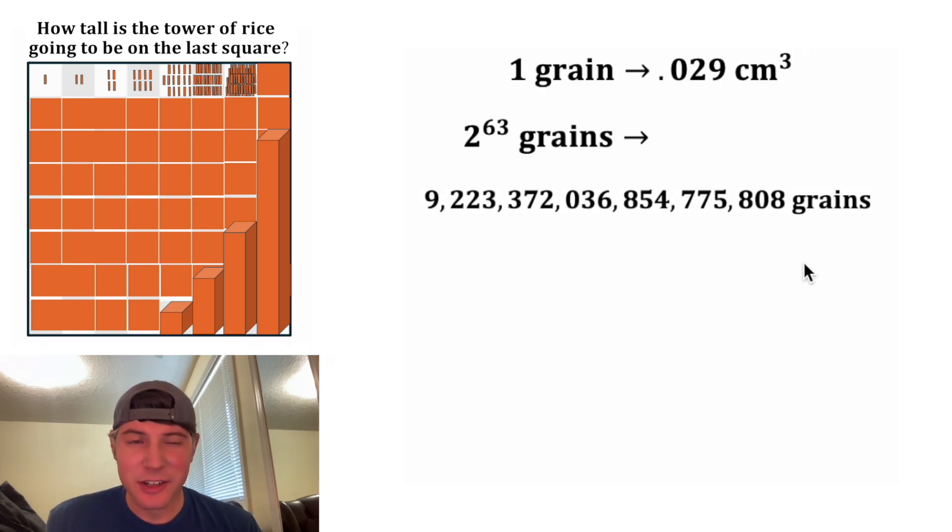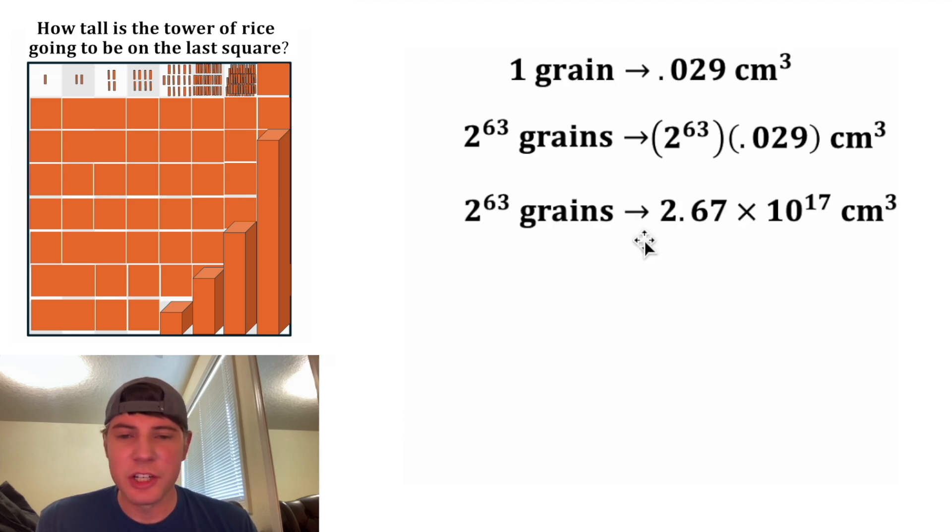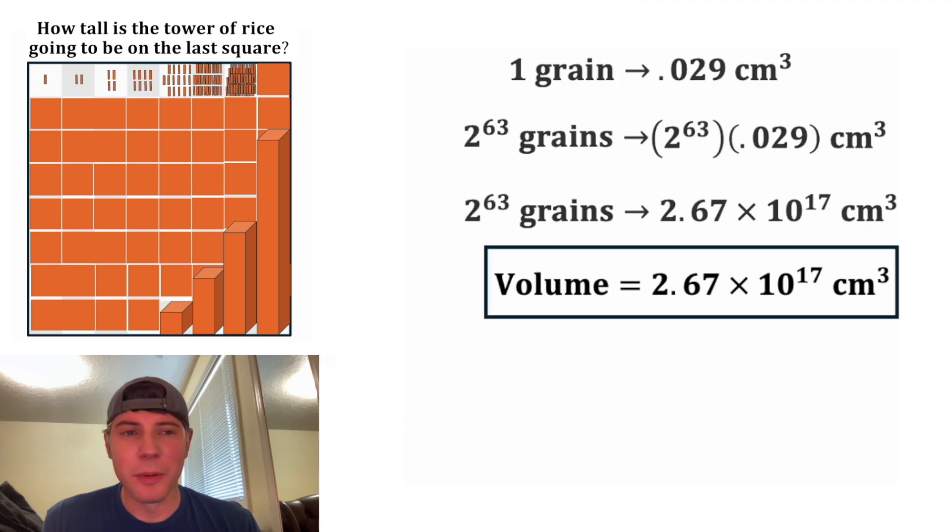And 2 to the 63 is this number right here. That's going to be about 9.2 quintillion grains of rice. And we're specifically interested in the volume of this many grains. So to get that, we're going to multiply this number times the 0.029 centimeters cubed. We can plug this into a calculator and in scientific notation, it's 2.67 times 10 to the 17th centimeters cubed. So this is going to be the total volume of the rice stacked on our final square. And this looks important. Let's put a box around it.